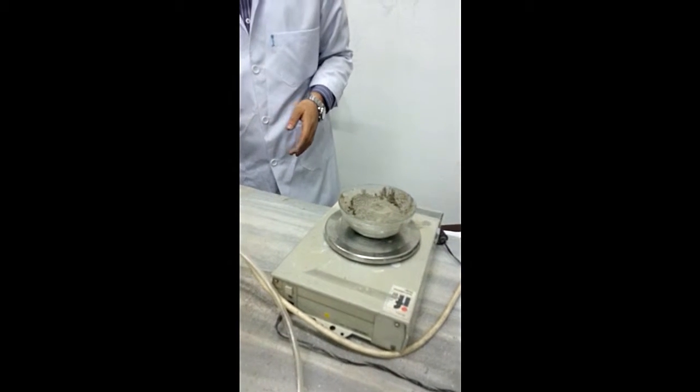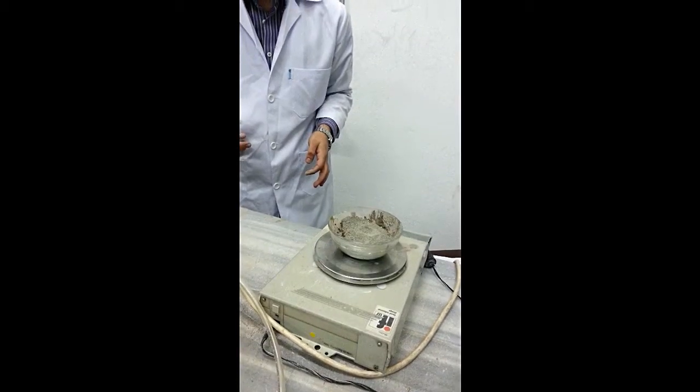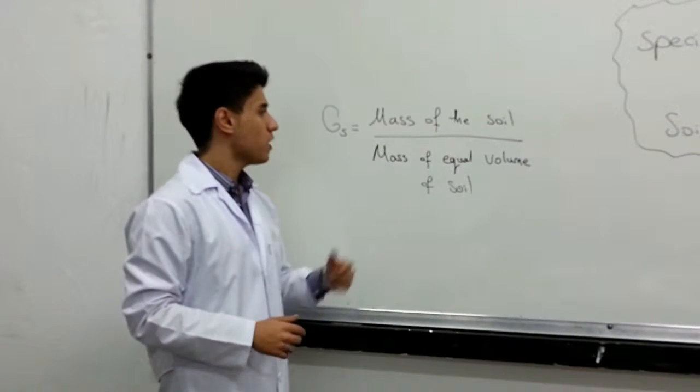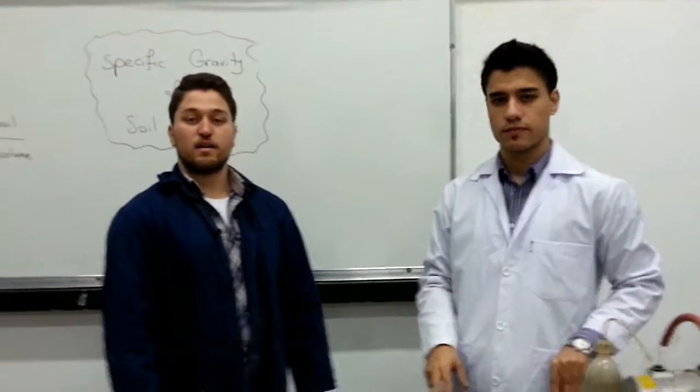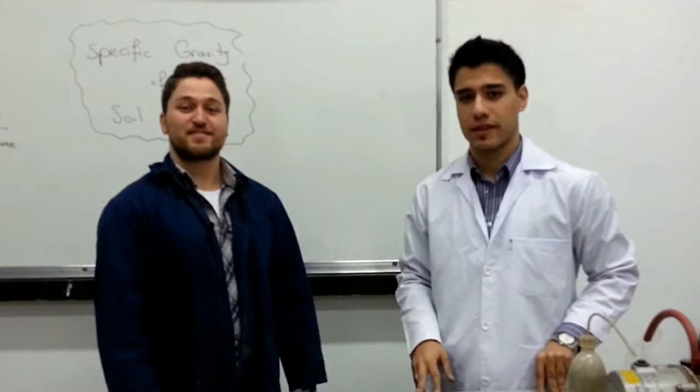As mentioned before, we determine the mass of the dry soil in the evaporating dish. After doing all the measurements, by using this formula, we obtain the specific gravity of the soil. Thank you for your attention. We will be shortly back in another experiment.